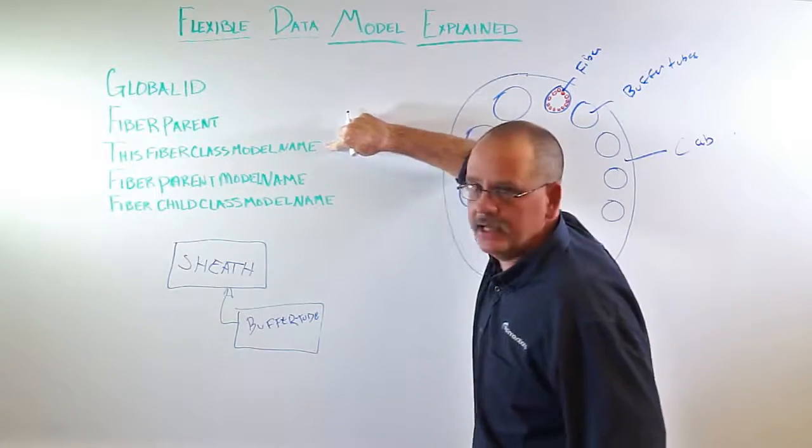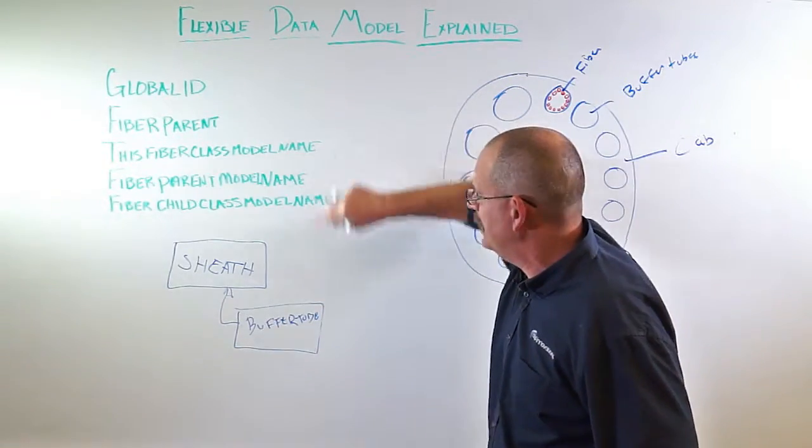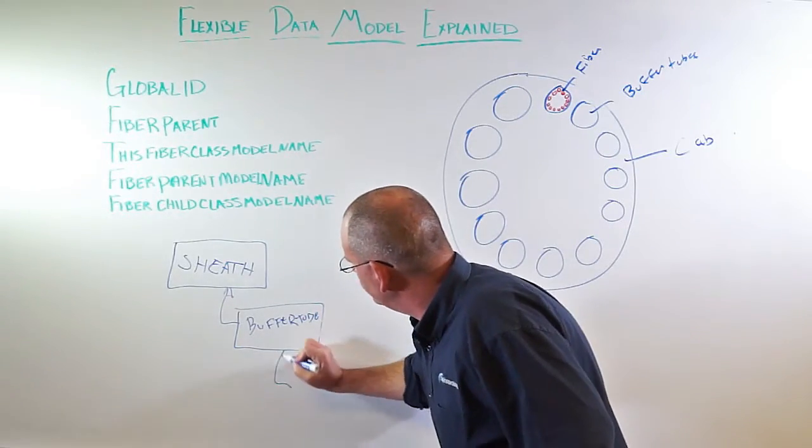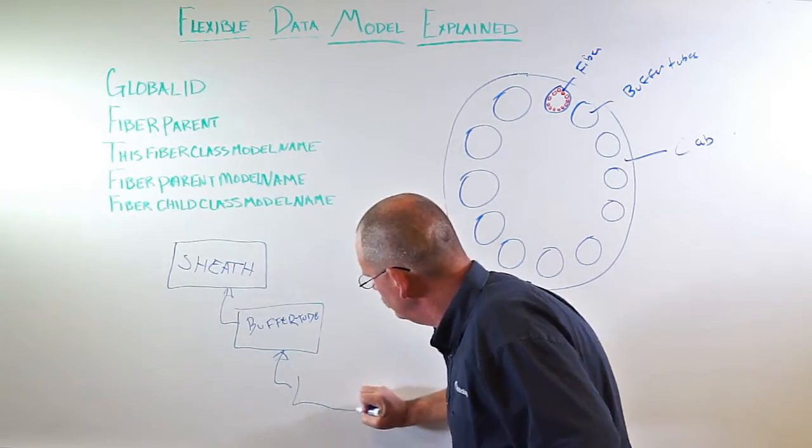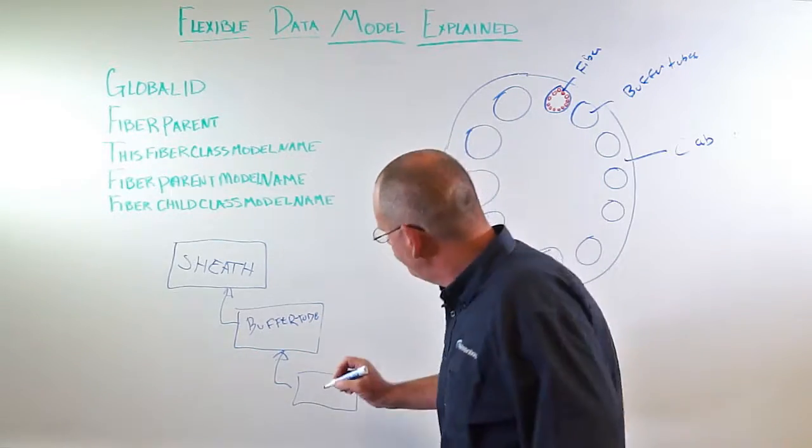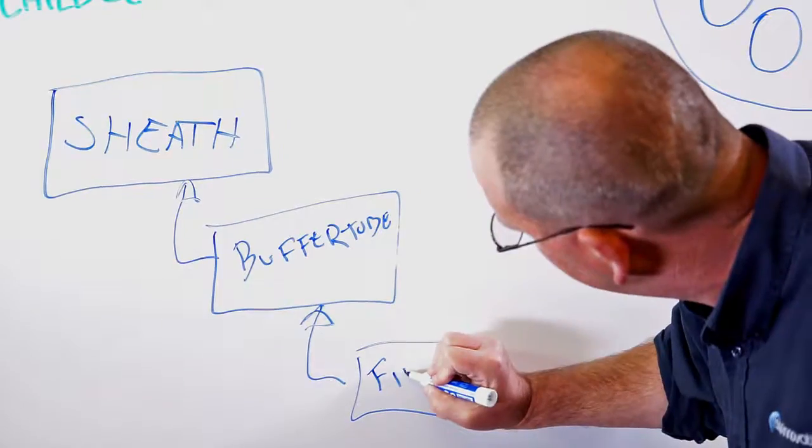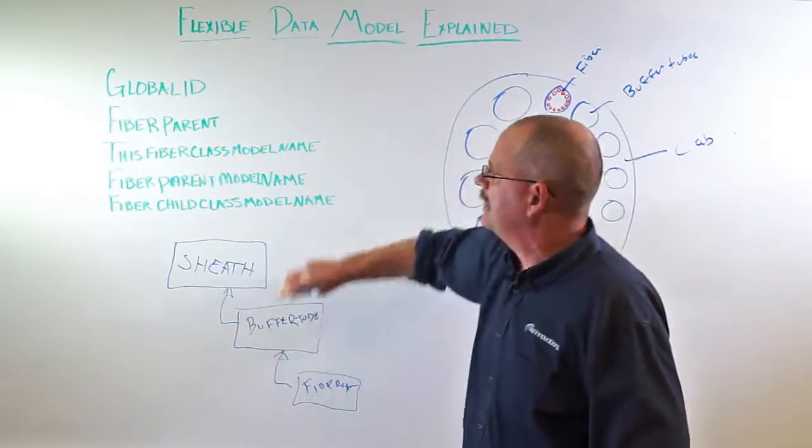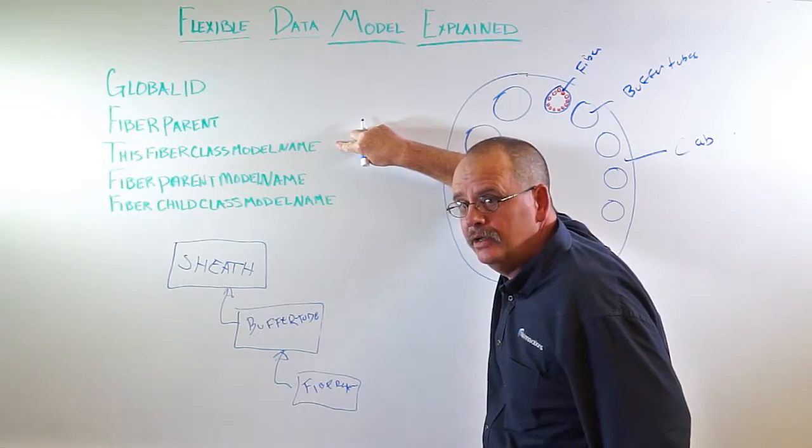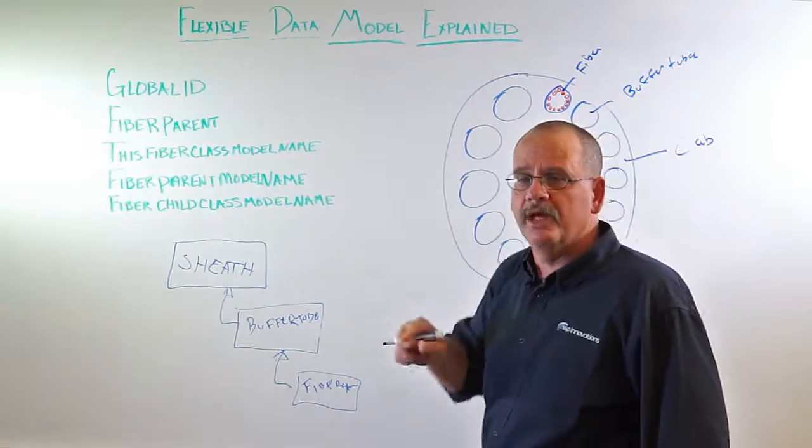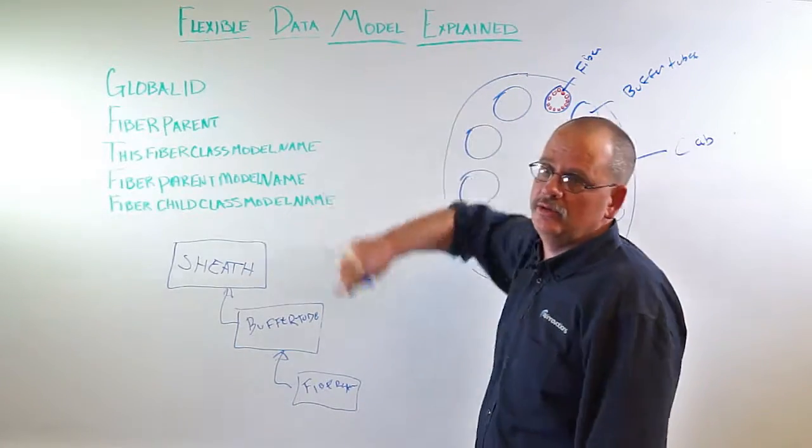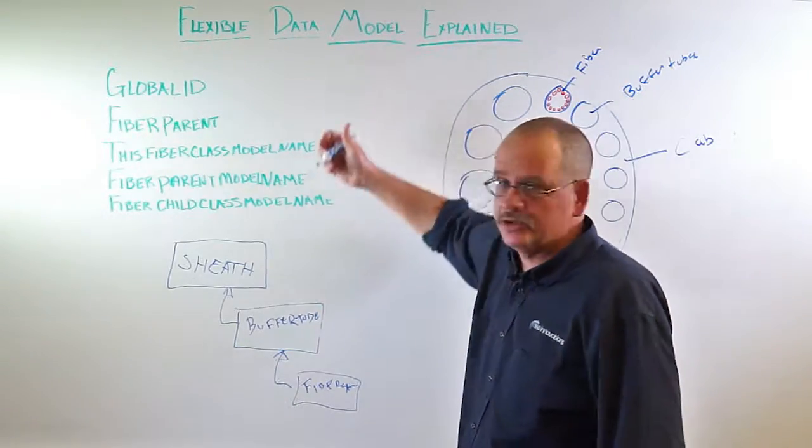So the value that's going to be entered here for the buffer tube object is buffer tube. Then the child of a buffer tube is fiber strand. The key thing is whatever is put here as the default value, you must have the object model name assigned to the object or feature class.